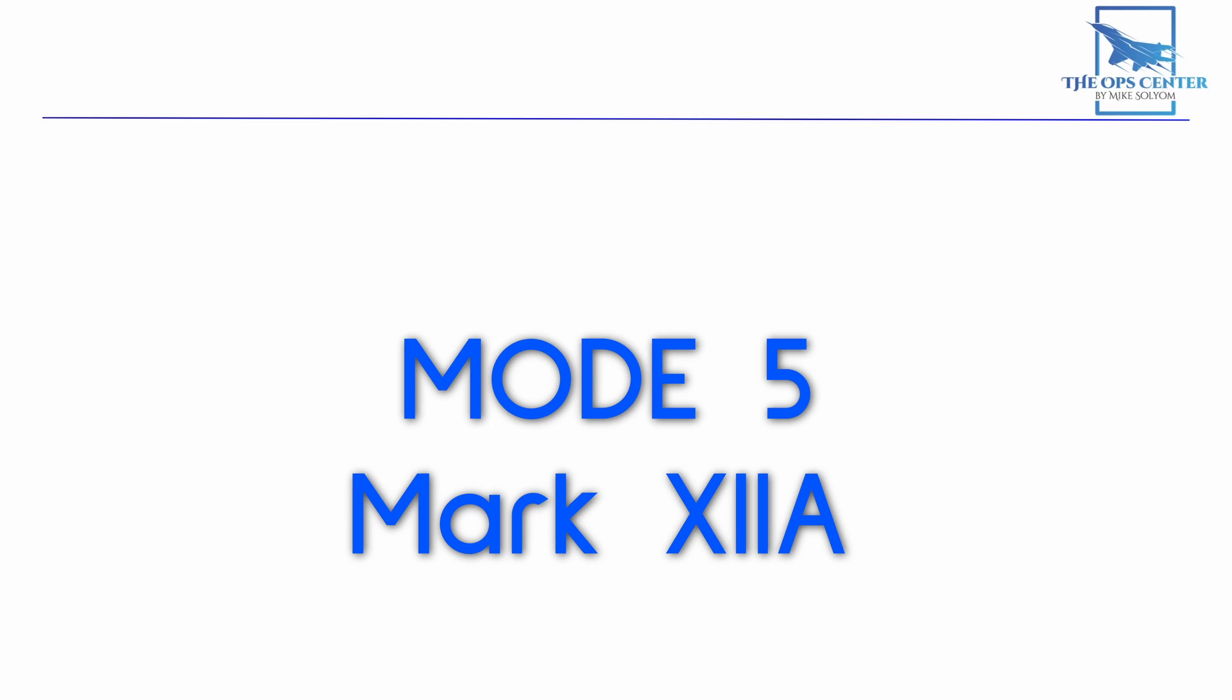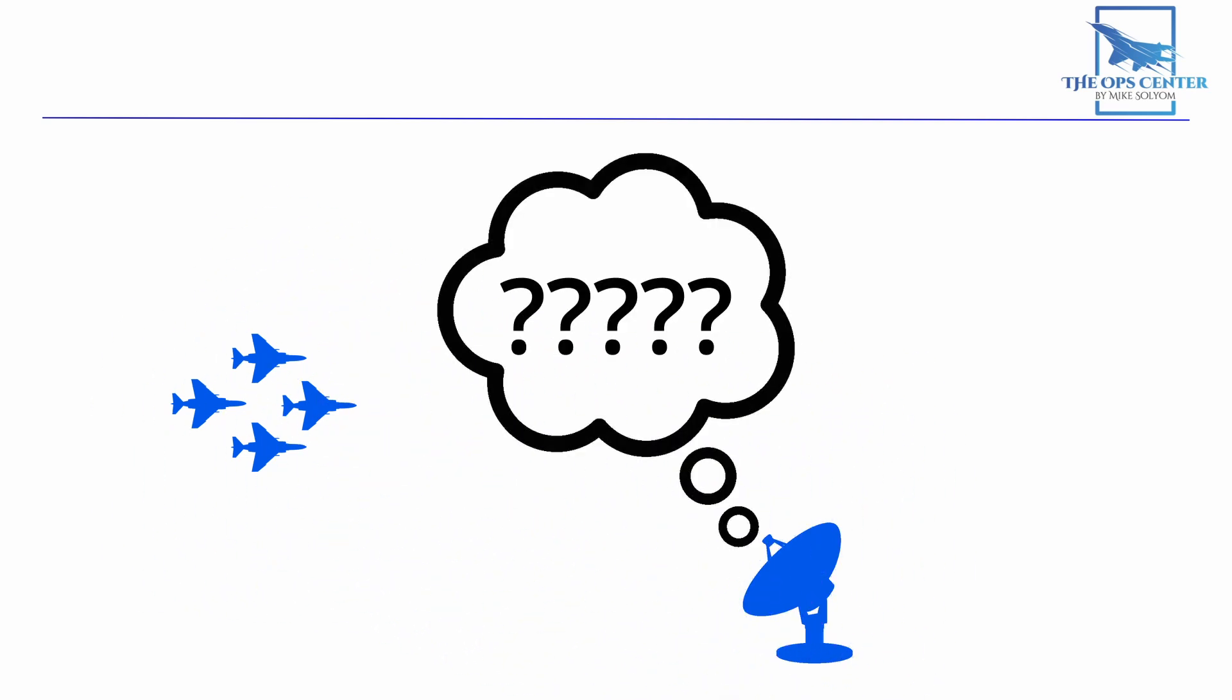The military also continued IFF development with the introduction of Mode 5, also known as Mark 12A. Like Mode 4, Mode 5 uses encoding to secure the interrogation and reply signals. But it's been upgraded from a simple 12-bit code to a cryptographically secure system certified by NSA. Mode 5 also introduced the random delay in the replies to prevent overlaps. This was a problem in tight formations like what you would see with fighters. They would all receive the interrogation signal at roughly the same time and respond right away garbling the response. So it was typical to see only the flight lead flying with an active IFF transponder. Mode 5 allows every aircraft in the flight to reply without risking an overlap.